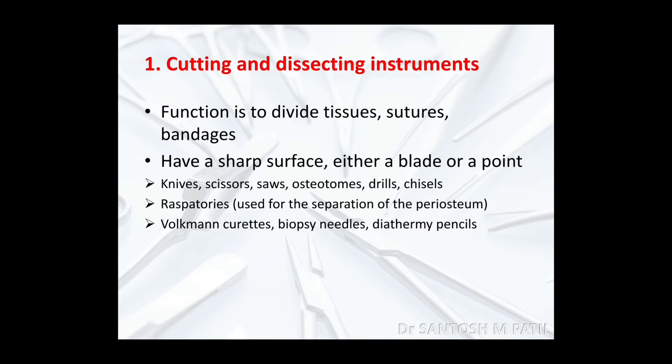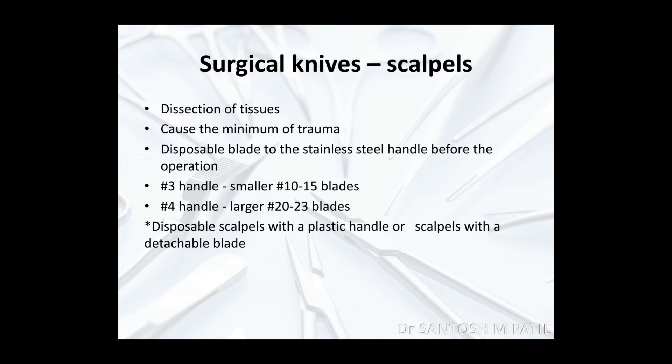The examples I will deal with are surgical knives. A surgeon is incomplete without a surgical knife or blades, so one should know what different blades are available and their indications. These scalpels are used for dissection of tissues — because they are so precise and well designed, the trauma to the tissue is minimal and they produce very clean cut wounds. They are mainly disposable blades mounted onto a stainless steel handle called the BP handle — Brad and Parker handle — always mounted before surgery.